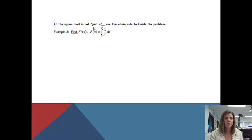Little change though. If the upper limit is not just x, we'll need to use the chain rule to finish the problem. You'll notice in this problem, our bottom number is a constant just like it's supposed to be. This top number is actually x cubed instead of x. So let me show you how we'll work this a little bit differently.